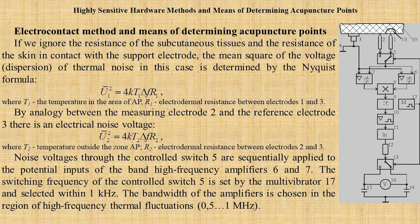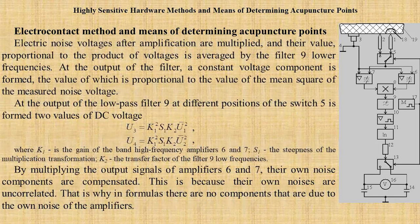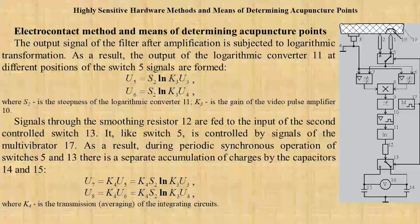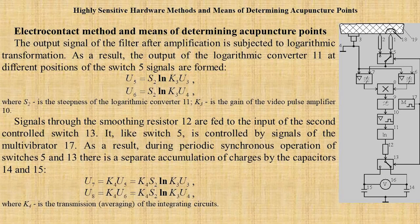the mean square of the voltage of the thermal noise is determined by Nyquist's formula. At the output of the filter, a contact voltage component is formed, the value of which is proportional to the mean square of the measured noise voltage. On slide 7, the output signal of the filter after amplification is subjected to logarithmic transformation.